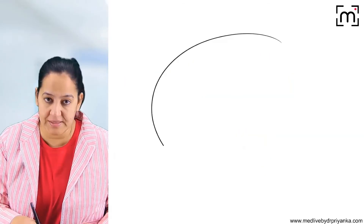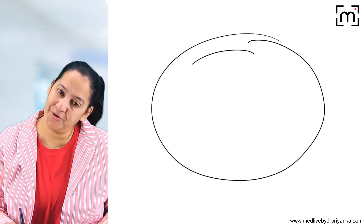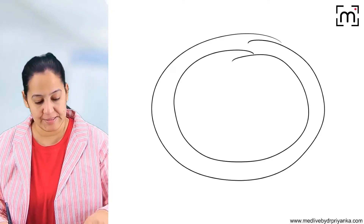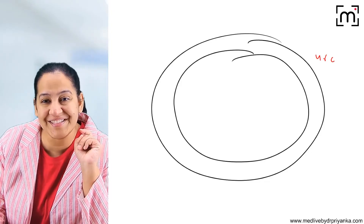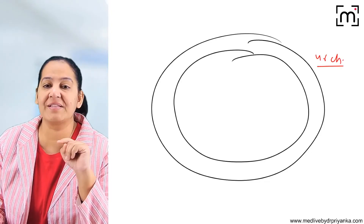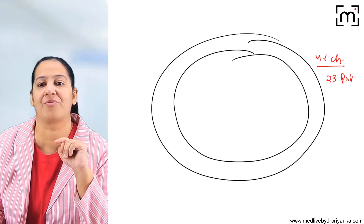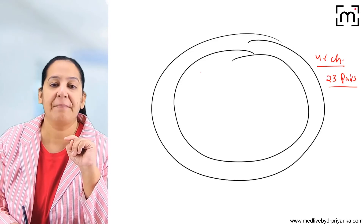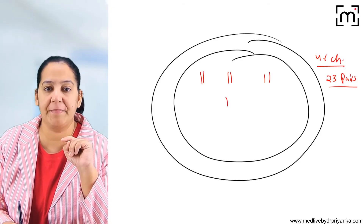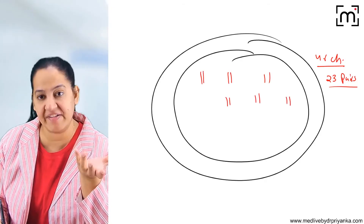In the human cell, inside the nucleus, there are 46 chromosomes — or rather 23 pairs of chromosomes. There are 23 pairs: pair number one, pair number two, and so on, totalling 23 pairs.